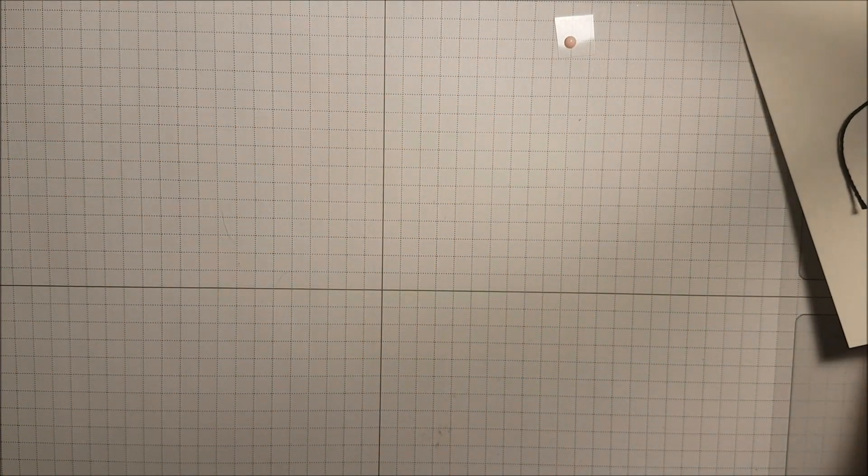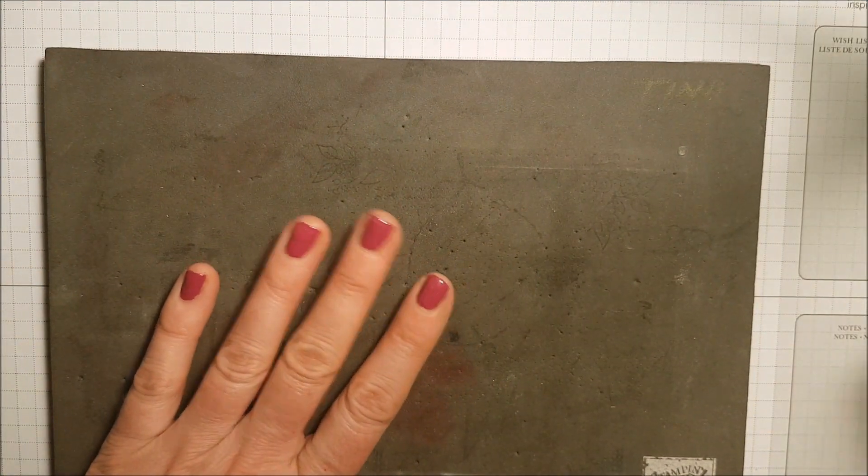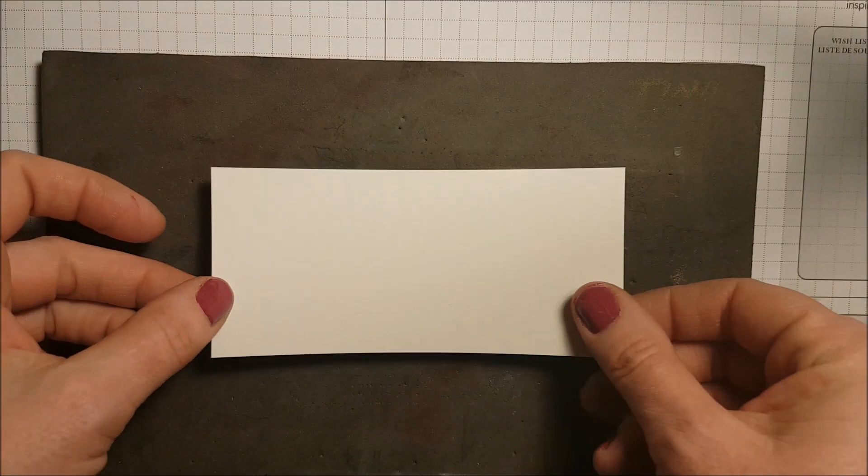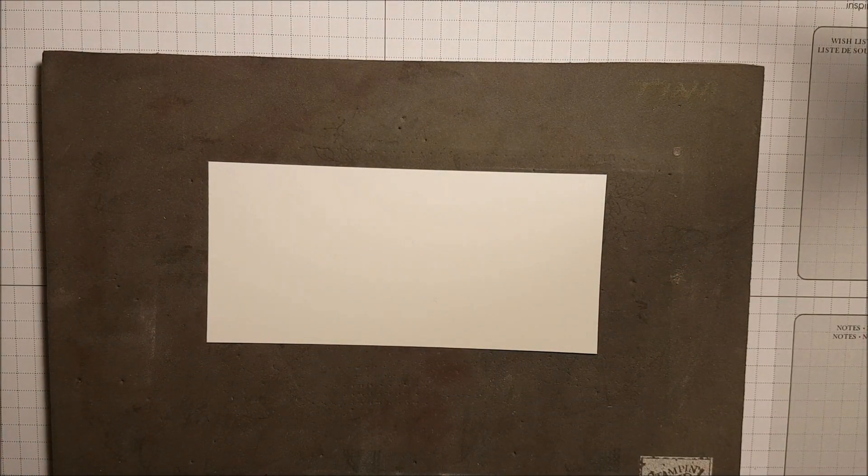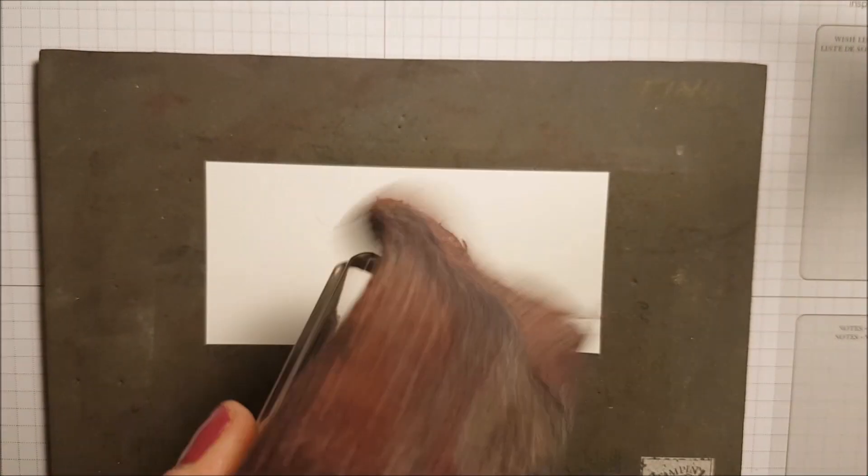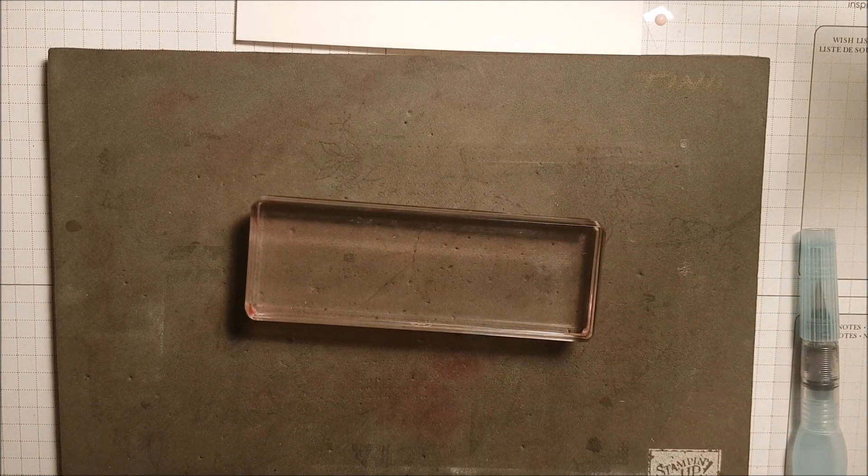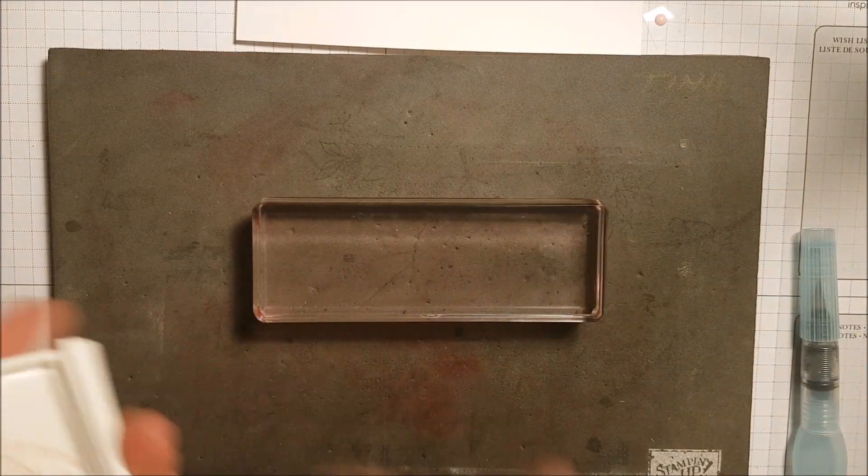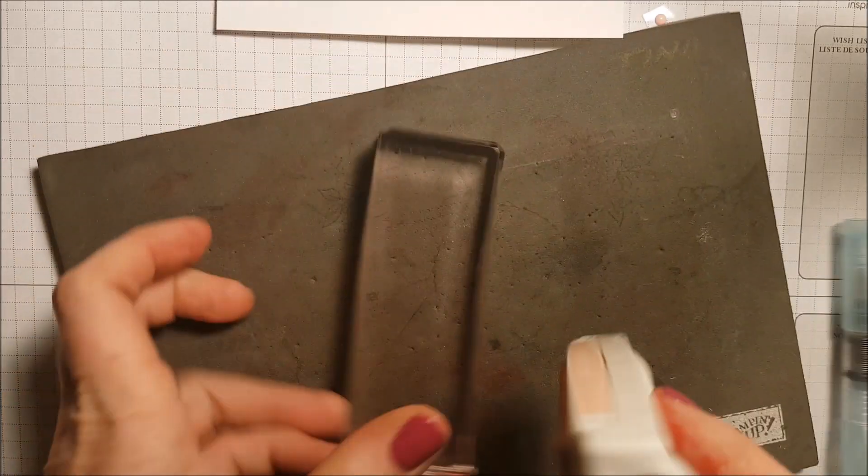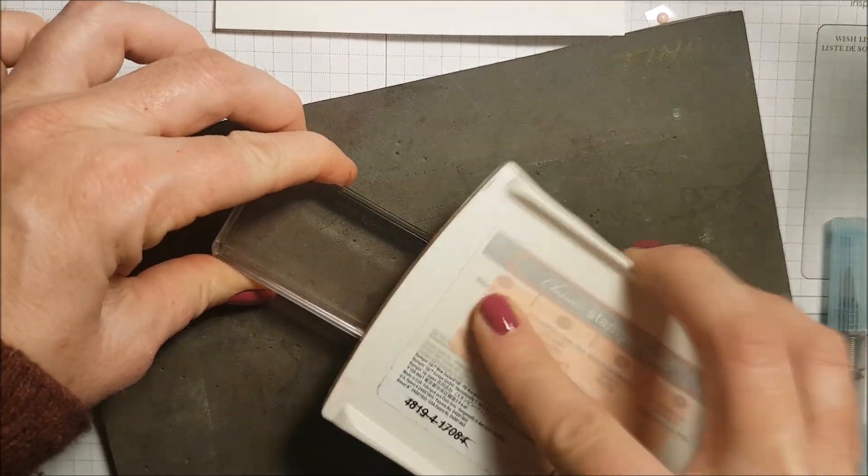I'm going to set that aside and bring my foam mat over because you really want to have this foam underneath your cardstock when you're stamping. For this technique I need block number H. I'm just giving it a little clean. I've got my clear block H and I'm taking my powder pink and adding ink to one end of the block.